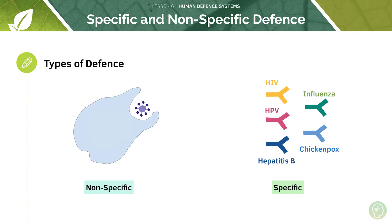In direct contrast to this we have specific mechanisms of defence in which the antibodies produced are specific to each type of disease. For example, the HIV antibody is specific only for HIV whereas the influenza antibody is specific only for influenza. The influenza antibody cannot be used to combat HIV infection, which is why we refer to this type of defence as specific, whereas a non-specific mechanism could be used to defend against both HIV and influenza.